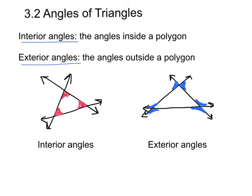When we talk about a polygon, we talk about a shape — a triangle, a square, a rectangle, a trapezoid. So right here, we have three intersecting lines that make a triangle. Interior angles are angles that are inside the polygon, which I have highlighted here in red. And exterior angles are the angles outside the polygon, which here I have highlighted in blue.